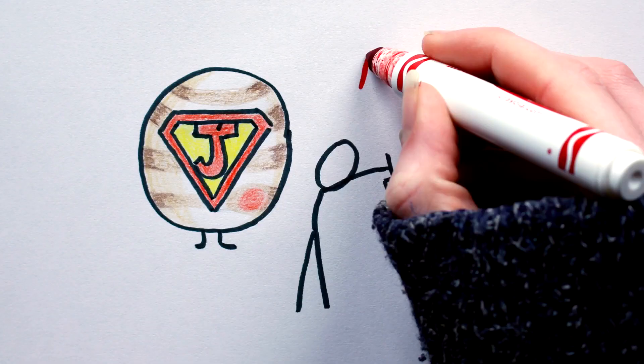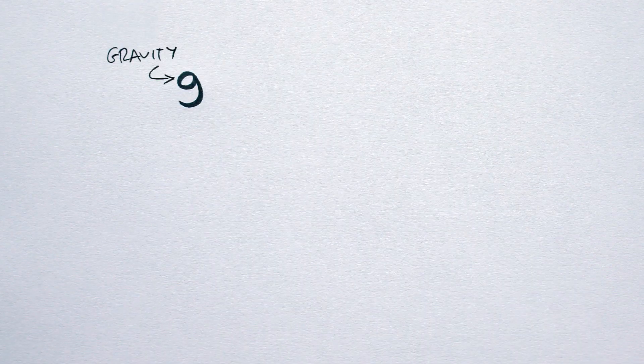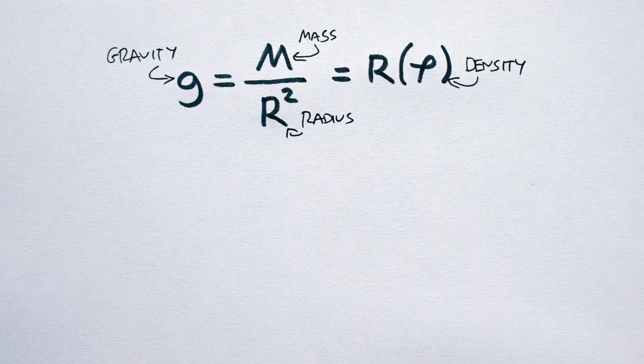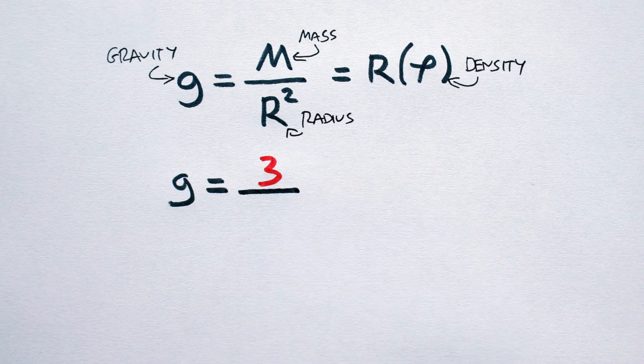First up, let's construct a super Jupiter, i.e. a giant planet more massive than Jupiter. Again, we can use the planet maker equation from the last video. Gravity is equal to mass over the radius squared, which is equal to the radius times density. Seeing as we are dealing with a super Jupiter, I'm going to pick, say, 3 Jupiter masses.